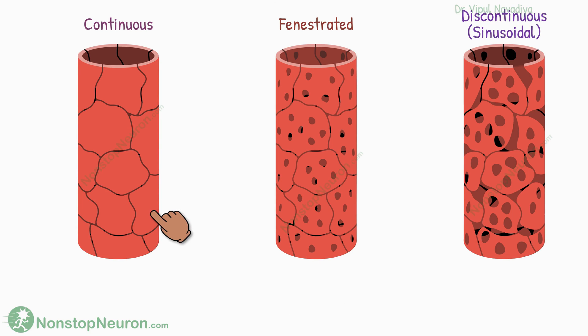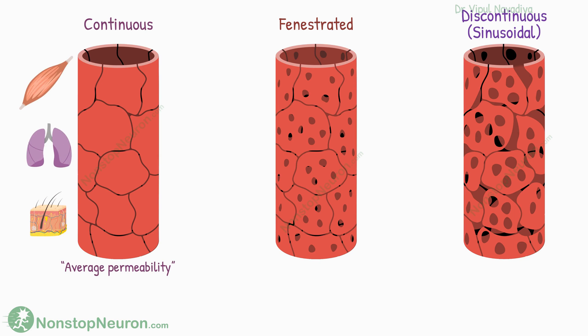Continuous capillaries have an overall structure close to the general structure that we just studied, so comparatively we can say they have average permeability. Most organs in the body — for example, skeletal muscles, lungs, skin, etc. — have continuous capillaries. In the brain, we have continuous capillaries which are less permeable due to tight junctions between endothelial cells.